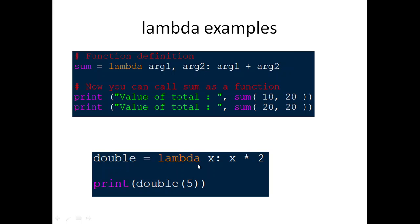Here is another lambda function example with one argument: double = lambda x: x * 2. It will double whatever element we pass. If we call print(double(5)), the result will be 10, since it multiplies 5 by 2.